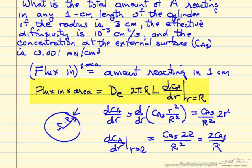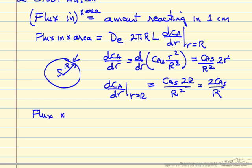Substituting this derivative into the flux expression: Flux × area = De·2πRL·(2CAs/R) = De·(4πL·CAs)/R.